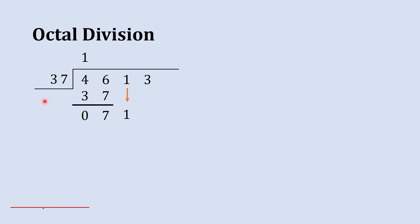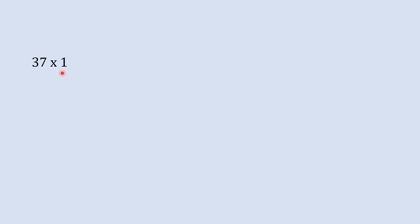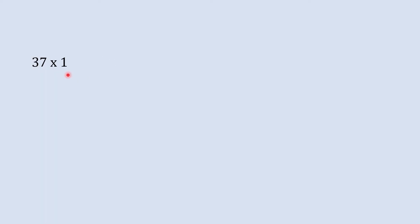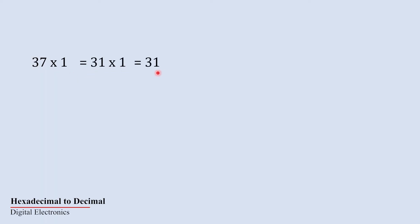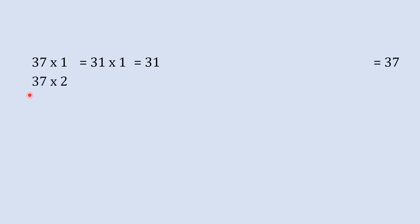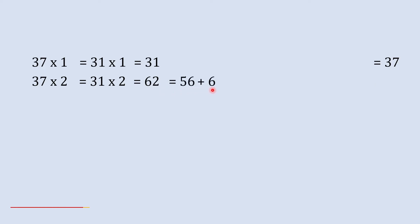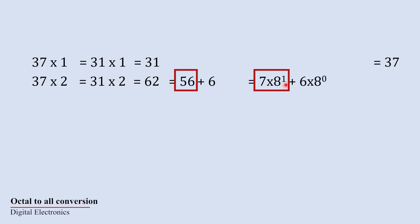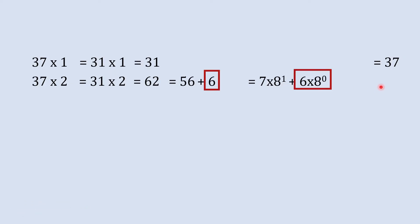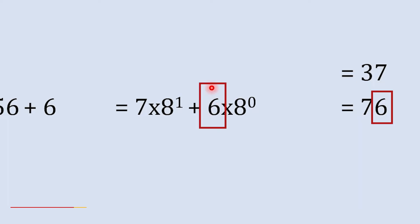Before building the table, you need to know the decimal equivalent of octal 37, which is 31. So 31 ones are 31, and the octal equivalent is 37. For 37 twos: 31 × 2 = 62. Converting 62 to octal: 62 = 56 + 6 = (7 × 8¹) + (6 × 8⁰), so octal 76 is the octal equivalent of 62.